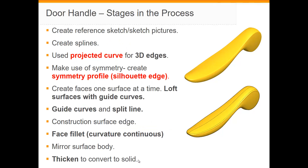The main stages in the process are as shown on screen. We'll begin by creating a reference sketch to give us an idea of the size of the handle, and we'll bring in sketch pictures from the side and the top. We'll use these sketch pictures to create splines. One interesting thing about this handle is that the front edge curves in two directions, so we'll use the project curve tool in SolidWorks, which creates a projected curve from two separate 2D sketches. We'll also make use of symmetry, as the handle is symmetrical about the right plane.